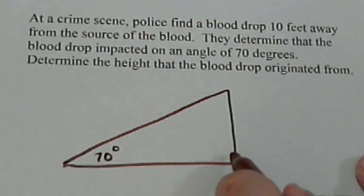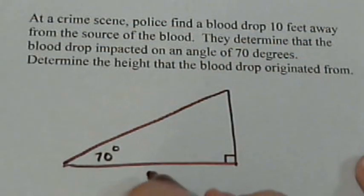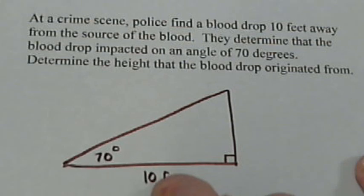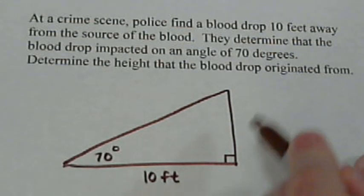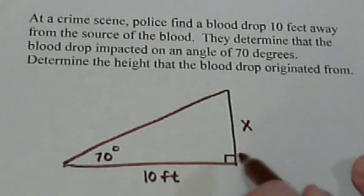And note the picture is not exactly to scale. 70 degrees would be a little bit higher than that. And it says the blood drop was 10 feet away. And what we want to figure out is how high the blood drop originated from.